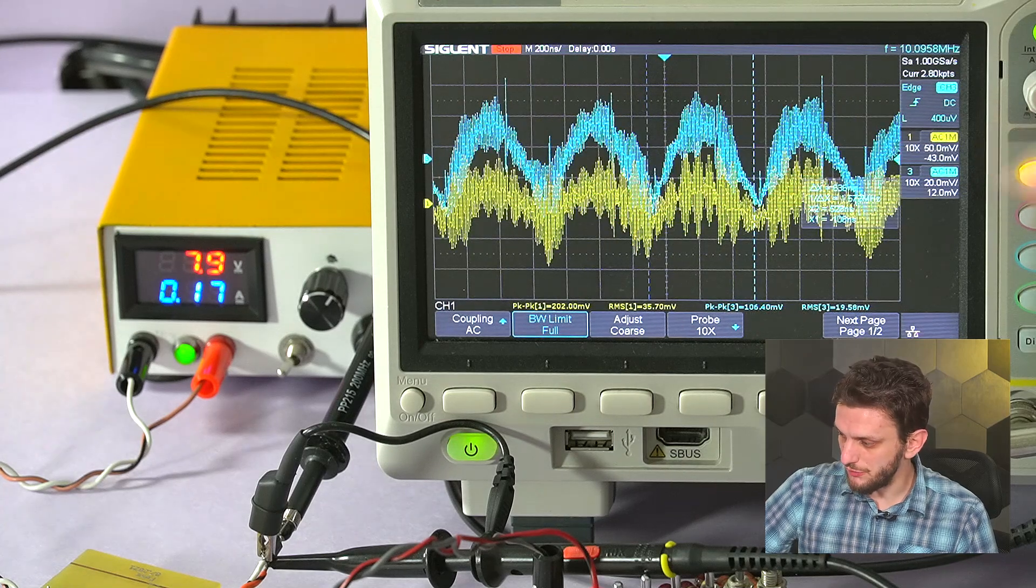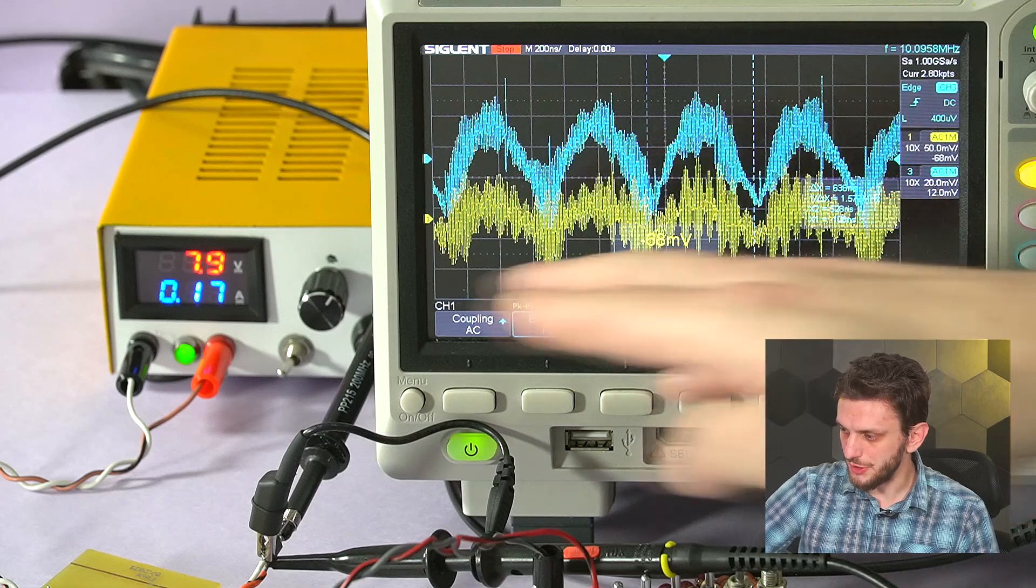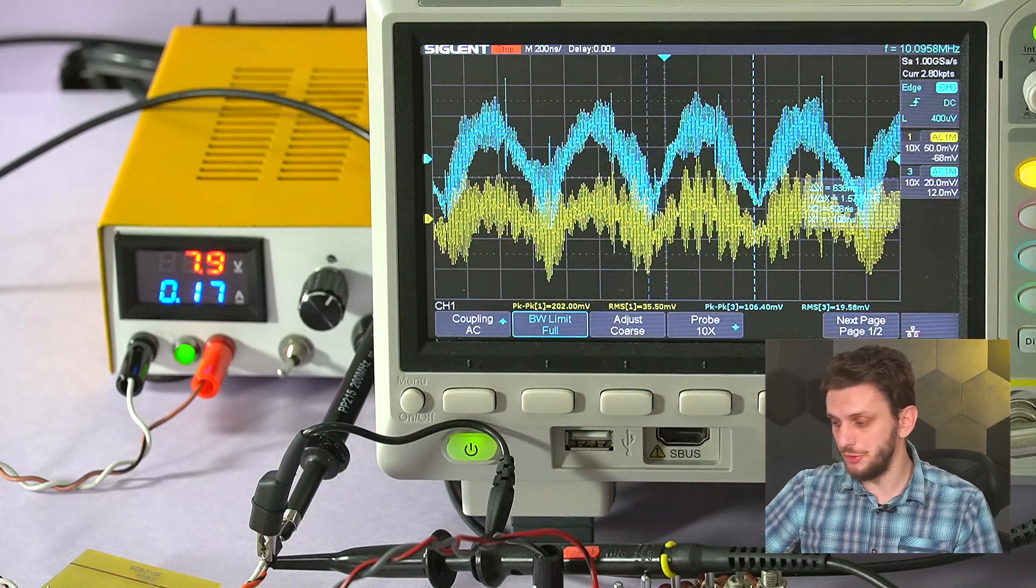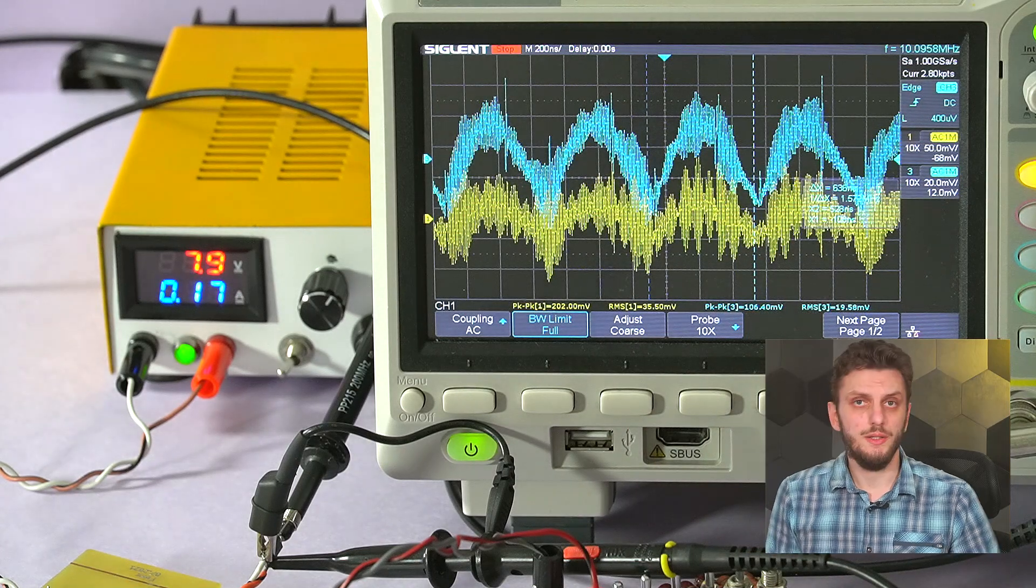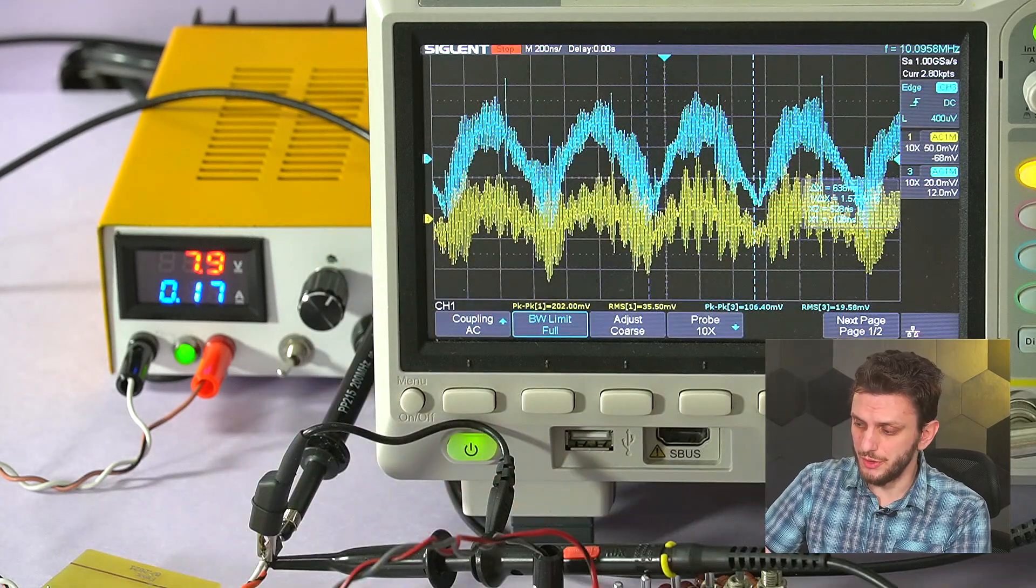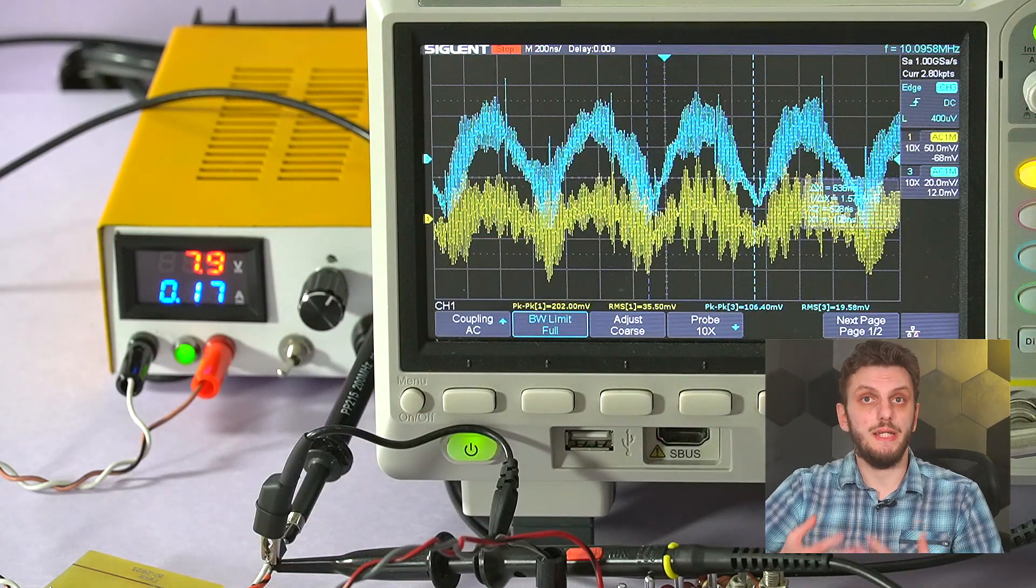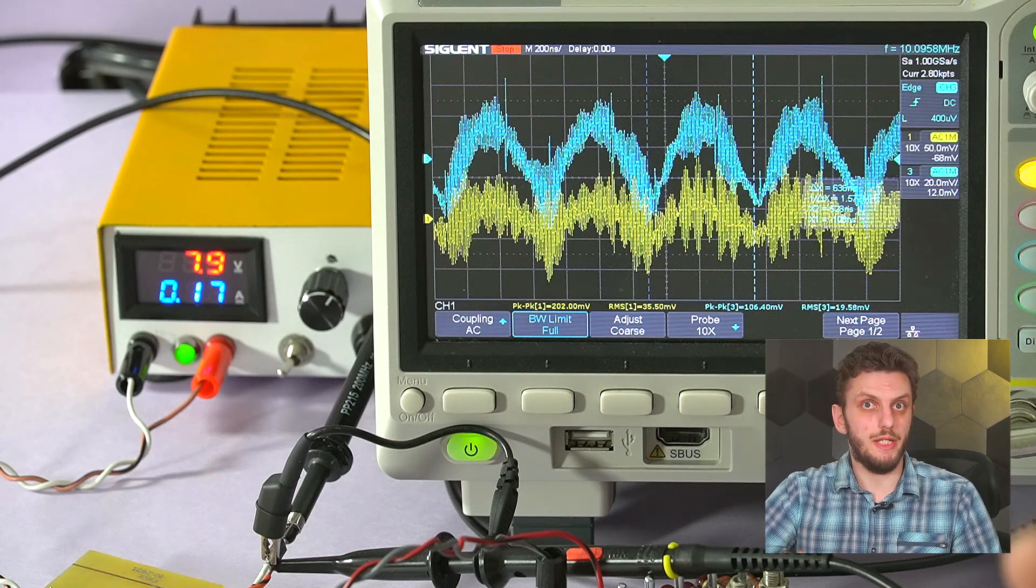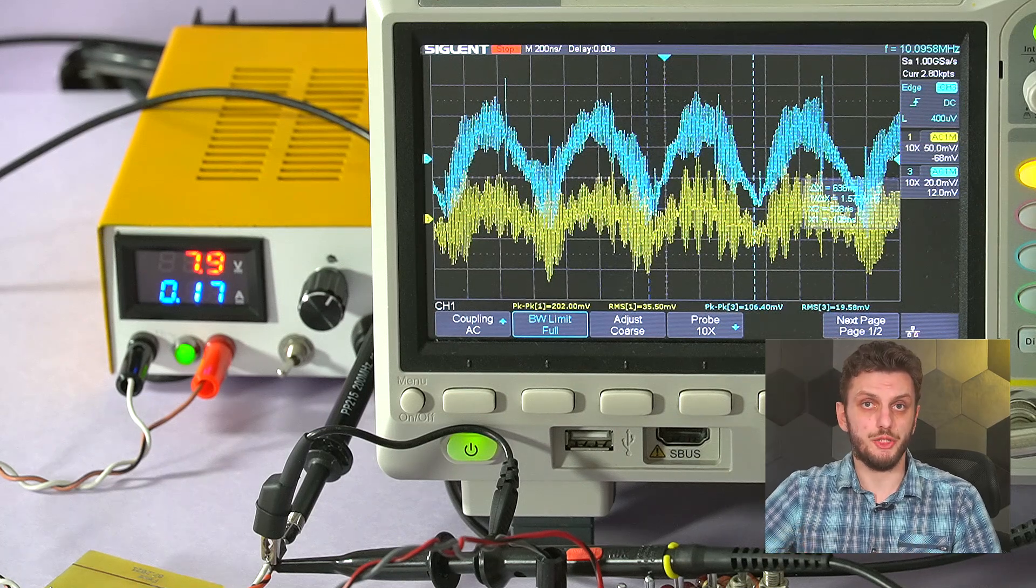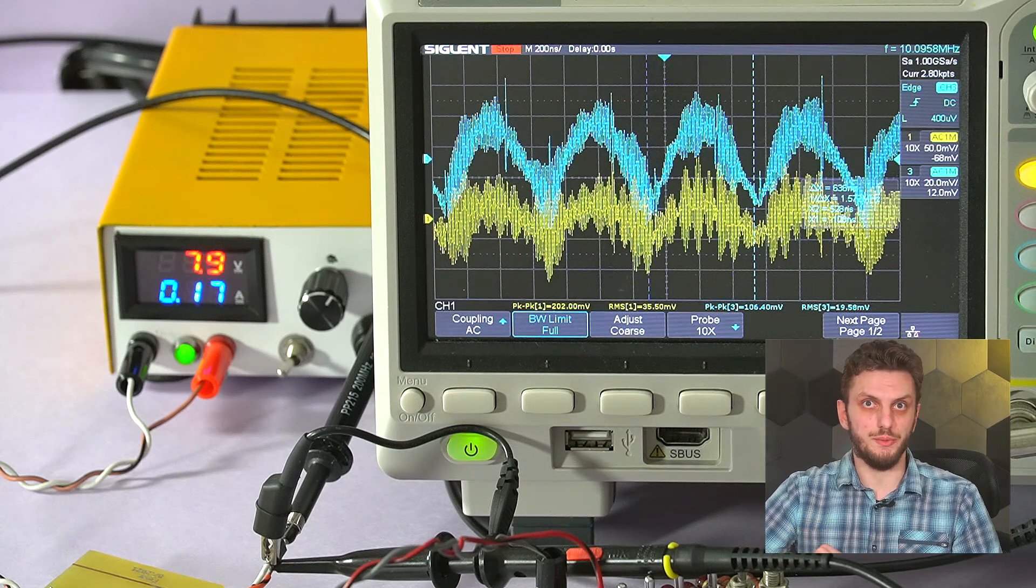So when we have 50 millivolts per division on the yellow channel, we can get a more clear picture. So we have the same basic waveform shape, but the peak to peak amplitude is almost double. So in general, there's quite a lot of noise around a switching converter. And if you're using huge loops, then you'll be picking up that noise as well, which is not necessarily the noise that is present on the output. So when trying to measure output noise, it's important to take care that you only measure output noise.